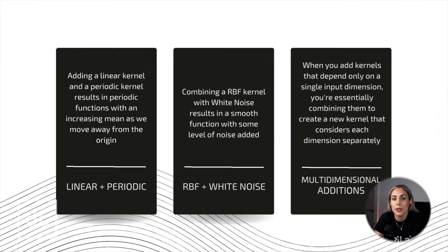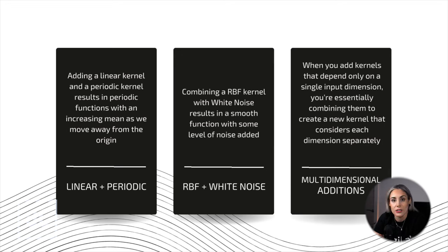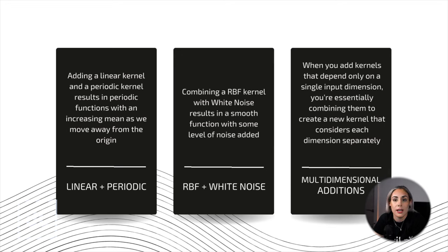Adding two kernels together can be thought of as an OR operation, where the resulting kernel has a high value if either base kernel has a high value. Adding a linear kernel and a periodic kernel results in periodic functions with an increasing mean as we move away from the origin. Combining an RBF kernel with white noise results in a smooth function with some level of noise added — the RBF captures smooth trends while the white noise adds random fluctuations. When you add kernels that depend on a single dimension, you create a kernel that considers each dimension separately.